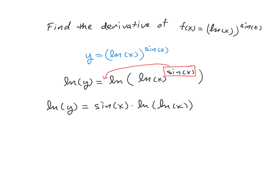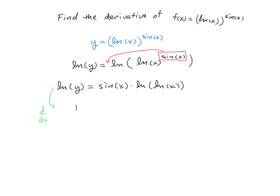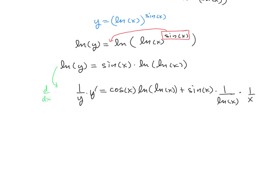So now we need to take the derivative of both sides of this. Taking d/dx, we get 1 over y times y prime is now equal to the derivative of this product. The derivative of the first is just the cosine of x, times the second, natural log of the natural log of x, plus first times the derivative of the second. The derivative formula for natural log is 1 over whatever's inside, so that's 1 over the natural log of x, multiplied by the derivative of what's inside, which is the derivative of natural log of x, which is 1 over x.